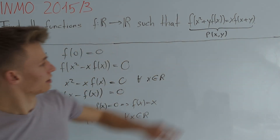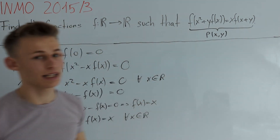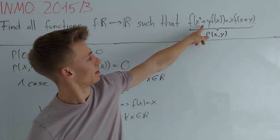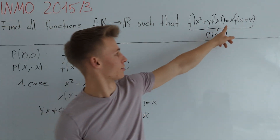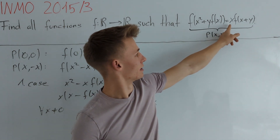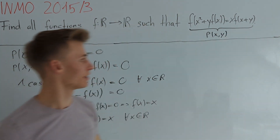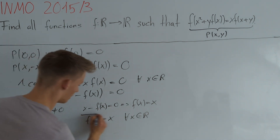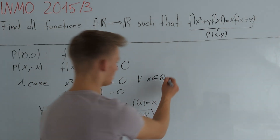We can now plug this back into p and verify: the left hand side equals x² + y·x, and the right hand side is also equal to x² + x·y, which equals the left hand side. Therefore f(x) = x is indeed a solution. Now let's deal with the second case.